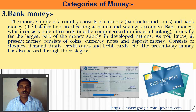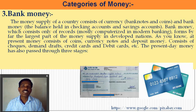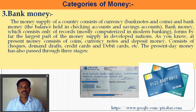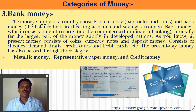Bank money forms the largest part of the money supply in developed nations. Present-day money consists of coins, currency notes, and deposit money — which includes checks, demand drafts, credit cards, debit cards, etc. This is bank money. Present-day money has passed through three stages: metallic money, paper money, and now credit/bank money.